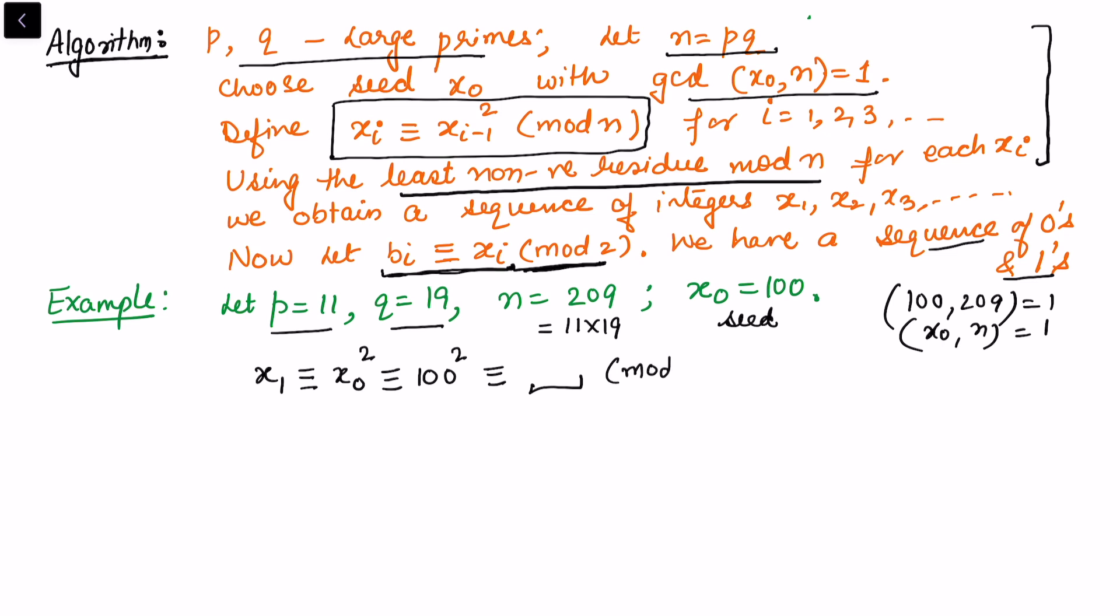100 square is this quantity 10,000. So this is 47 times 209 plus the remainder 177. So when I divide this number 10,000 by 209, I will get 47 as the quotient and 177 as the remainder. So this means the